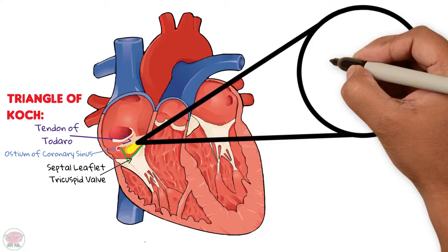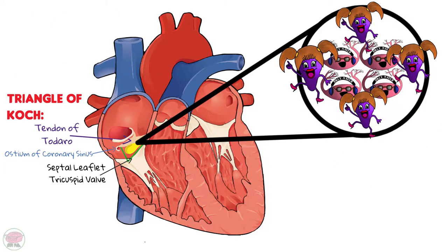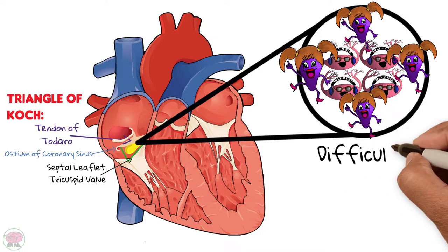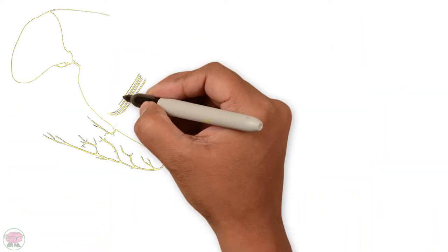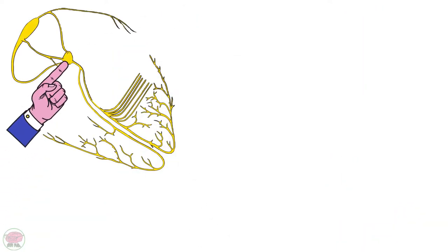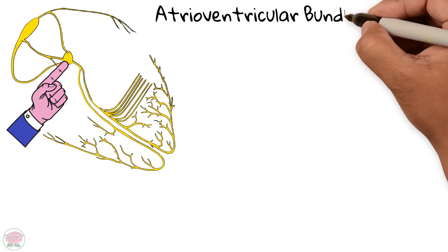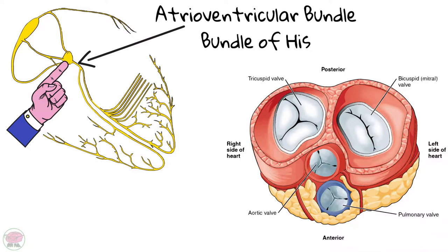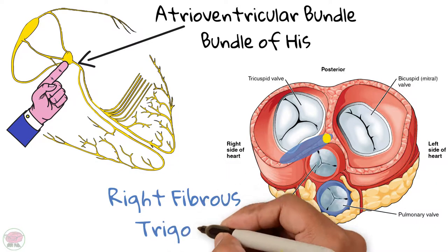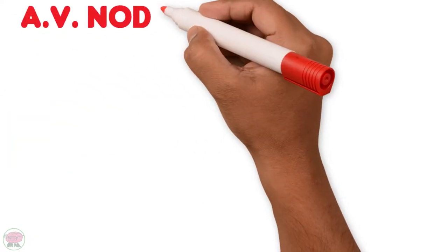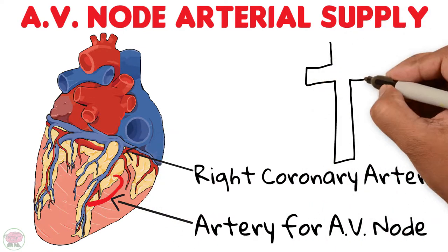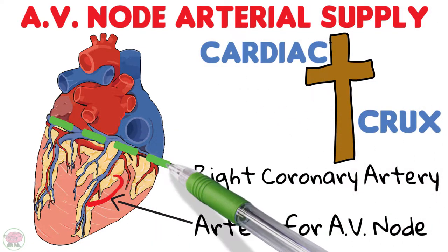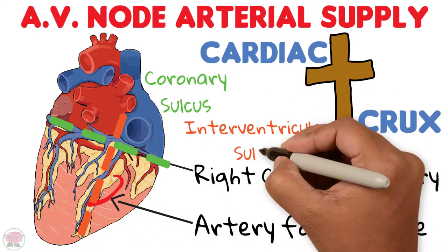Just like the SA node, the AV node is also made of nodal and transitional cells. An important characteristic is that these cells are difficult to activate, resulting in a delay in the propagation of the electrical stimulus — we'll discuss this delay more when we cover the heart's physiology. For the AV node to communicate with the ventricles, it transforms into the atrioventricular bundle, also known as the bundle of His, and penetrates the heart's fibrous skeleton in an area known as the right fibrous trigone. Arterial supply comes from a vessel originating from the dominant coronary artery, usually the right, at an area known as the cardiac crux, where the coronary sulcus and the posterior interventricular sulcus meet.